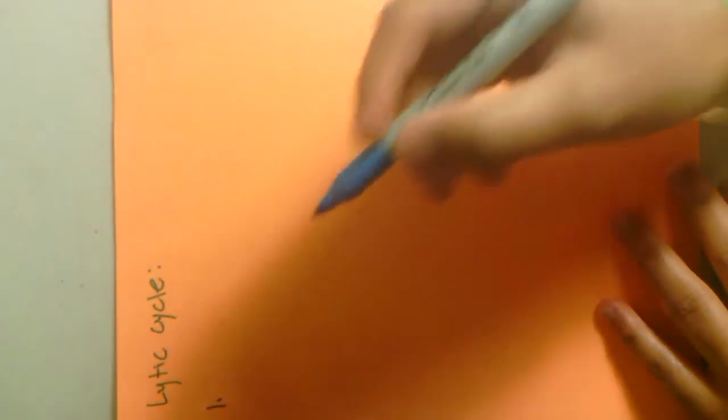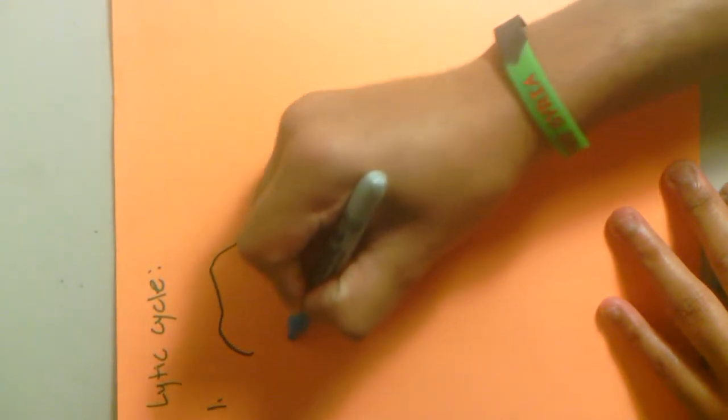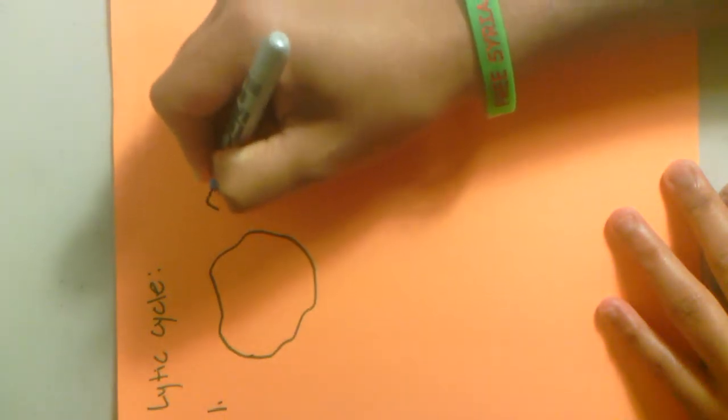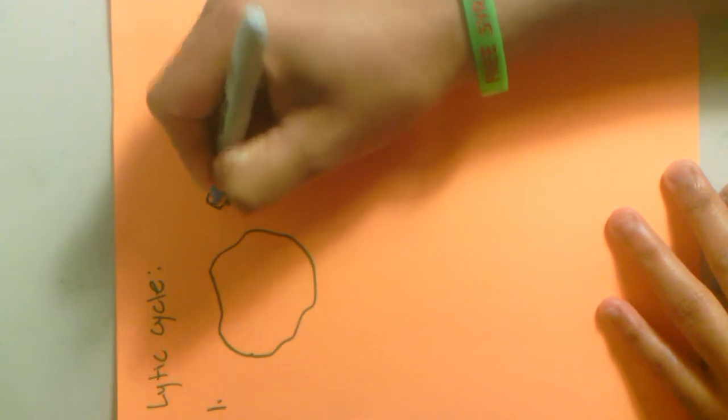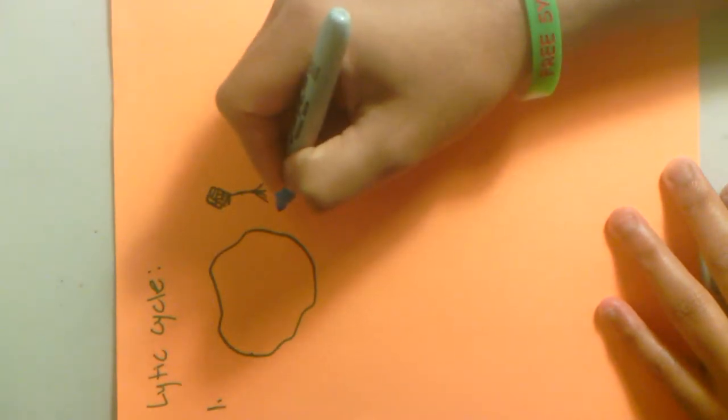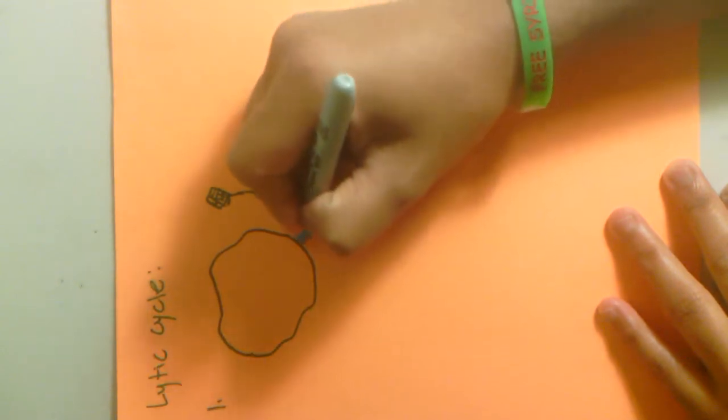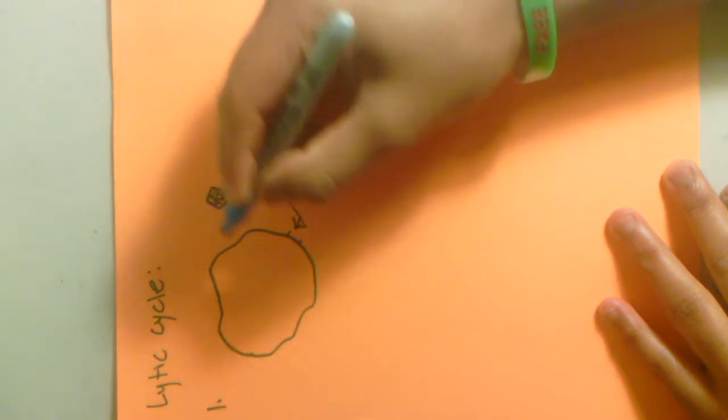So step one, basically a virus arrives on a host cell. So over here, we'll draw ourselves a little host cell. And we have this one little virus cell here, a virus on the legs. Make it look like a little virus. And as it arrives, it arrives on a specific receptor site. Say, for instance, it's our little receptor site. And it arrives exactly over here at this receptor site.